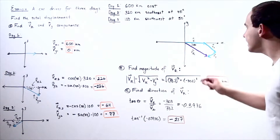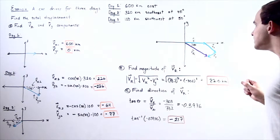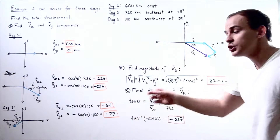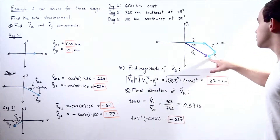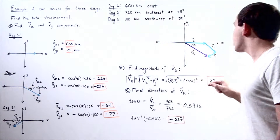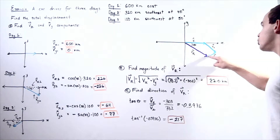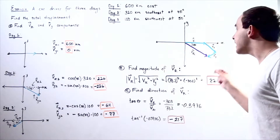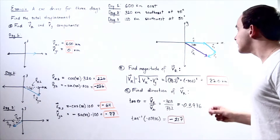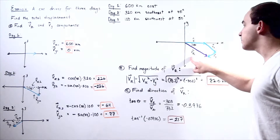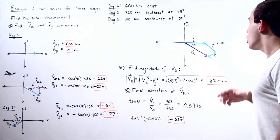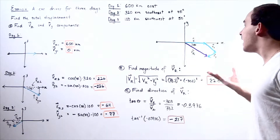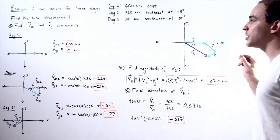We want to find the final displacement from the point of origin — our initial position — to the final position after the third day. So we want to find the magnitude as well as the direction of our displacement resultant vector, v subscript r. We're essentially adding up all these vectors to find what the resultant vector is.